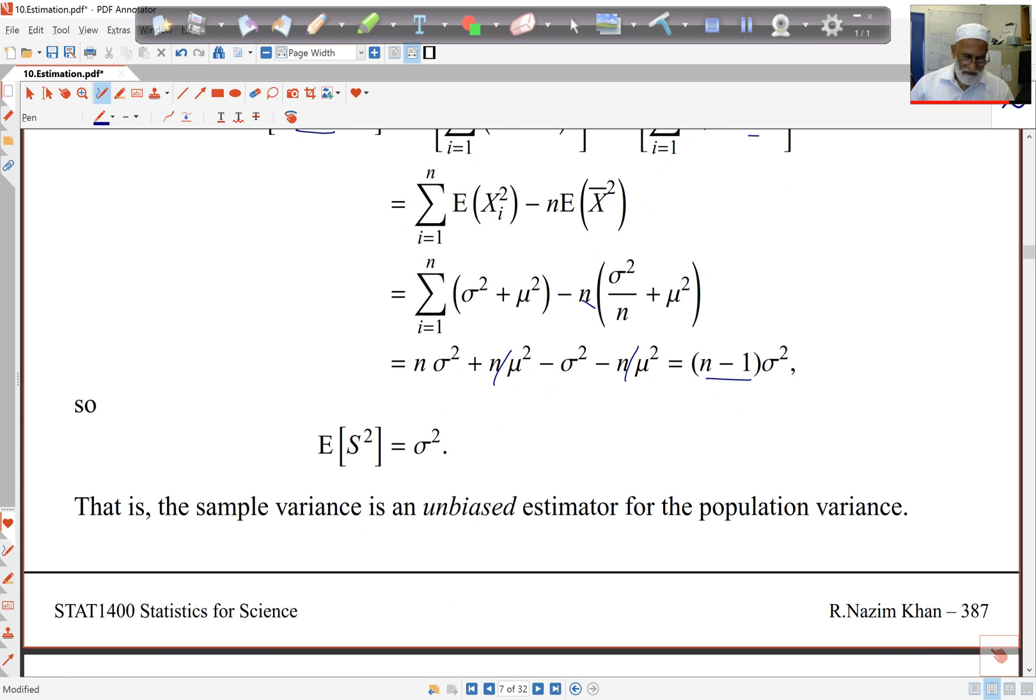So the sample variance is an unbiased estimator of population variance. But note, S is not unbiased.